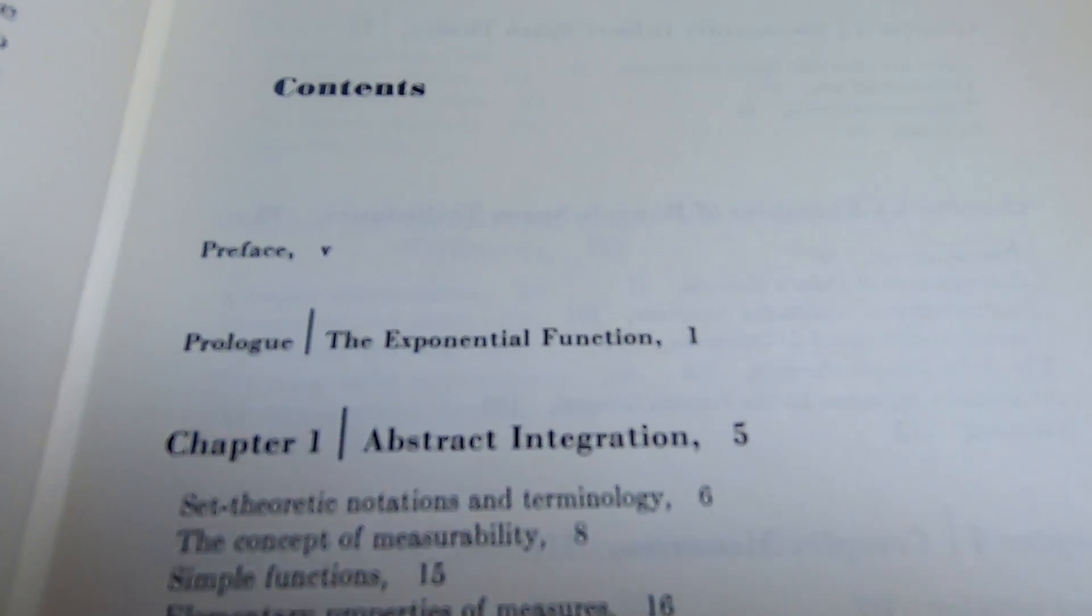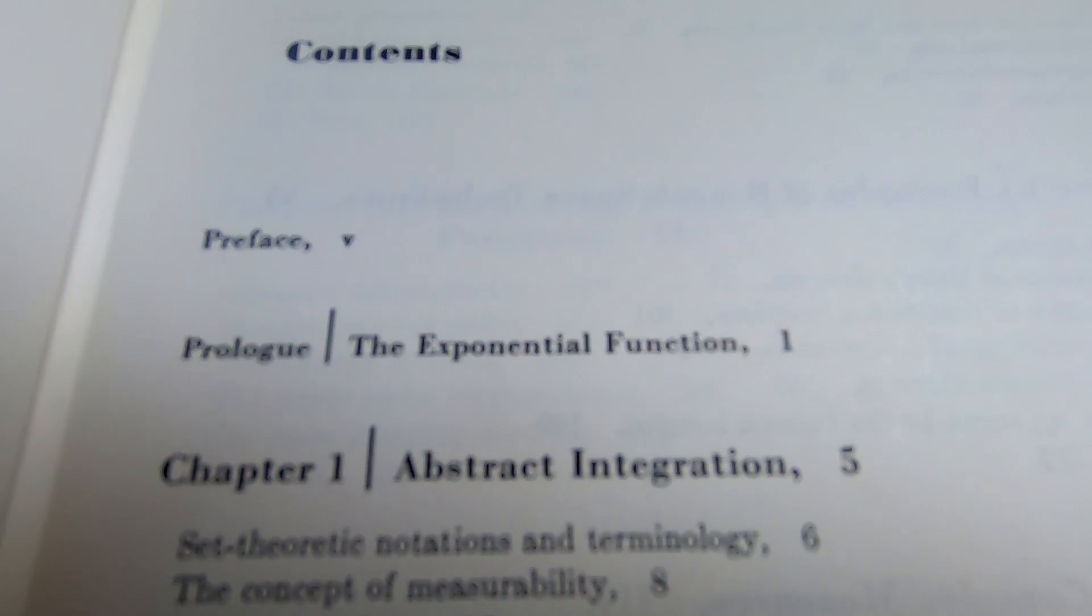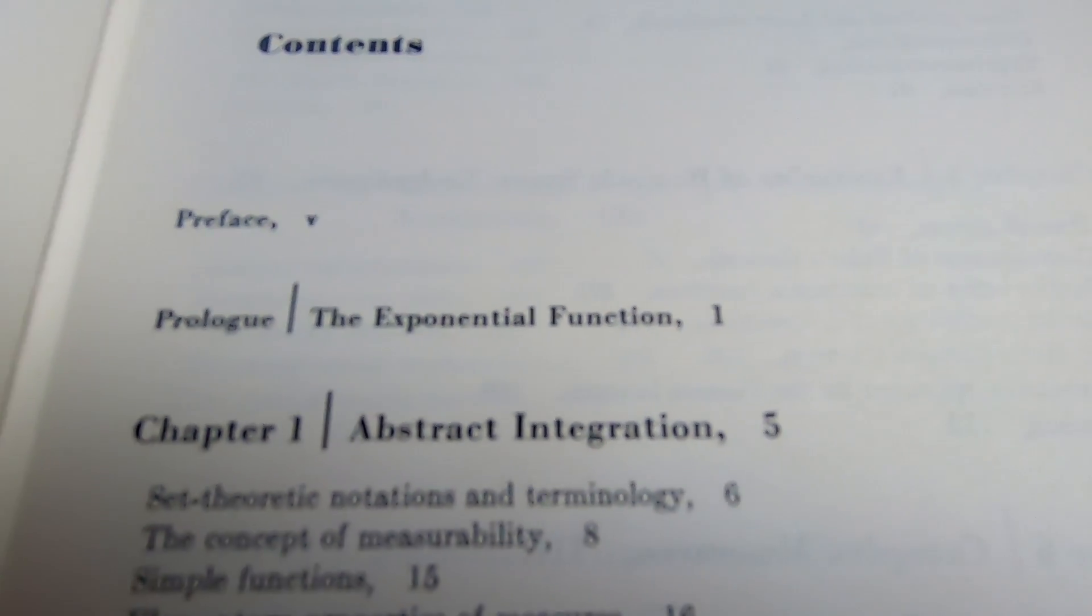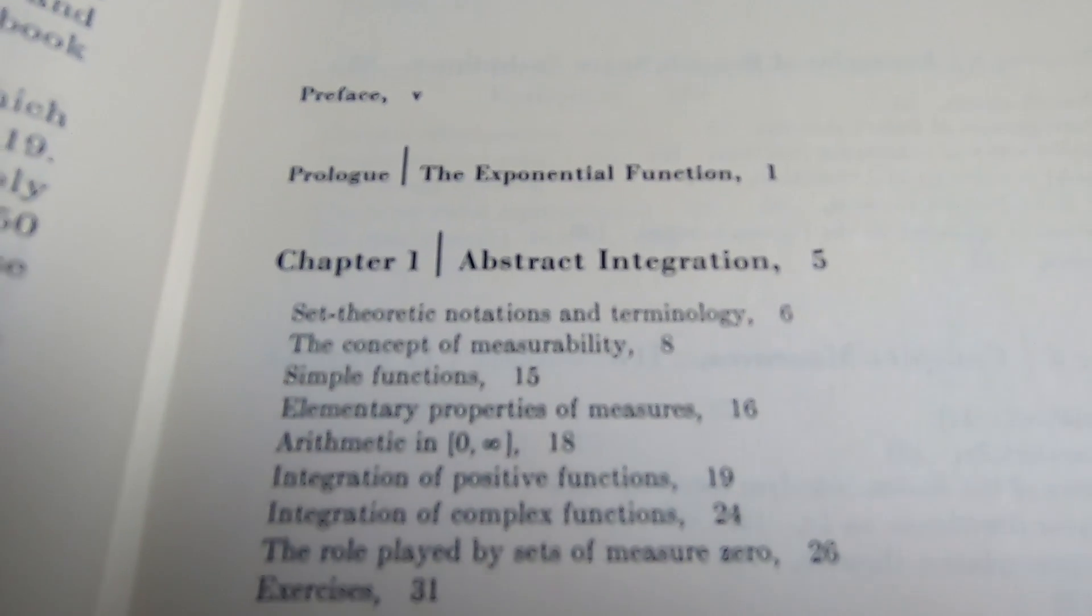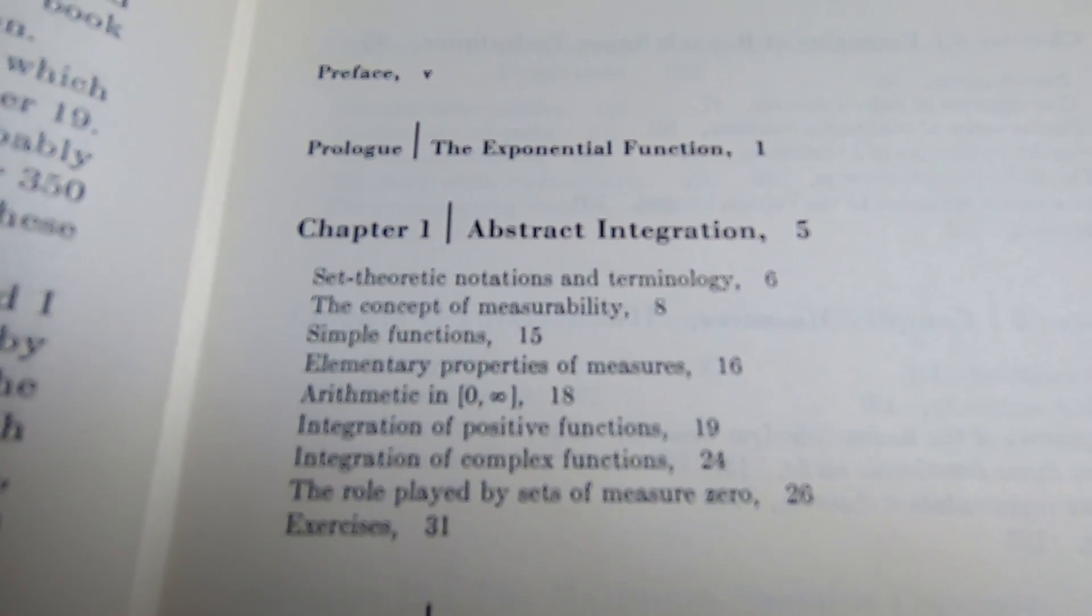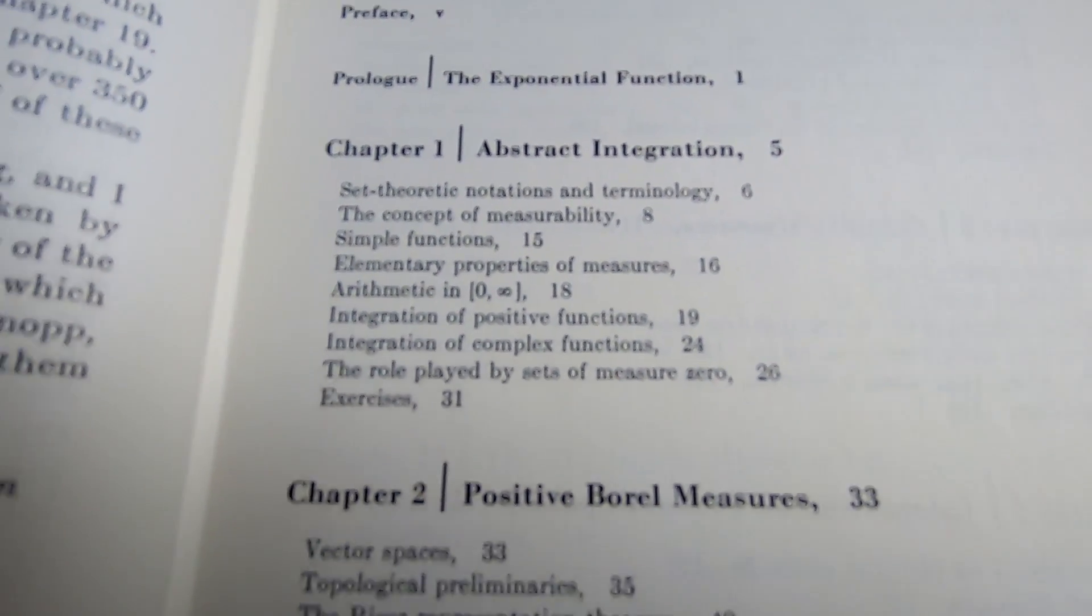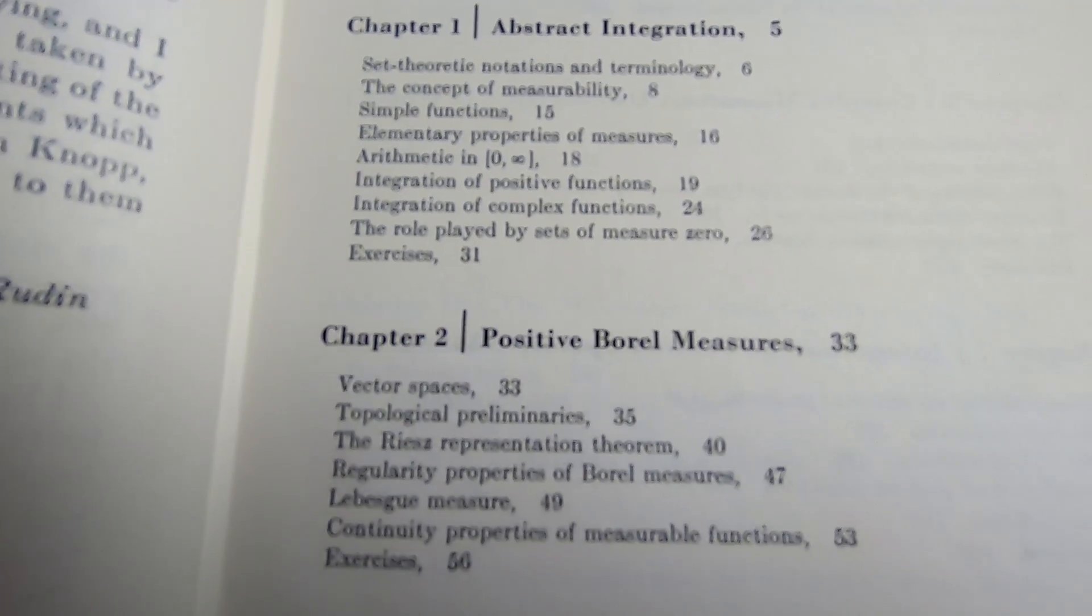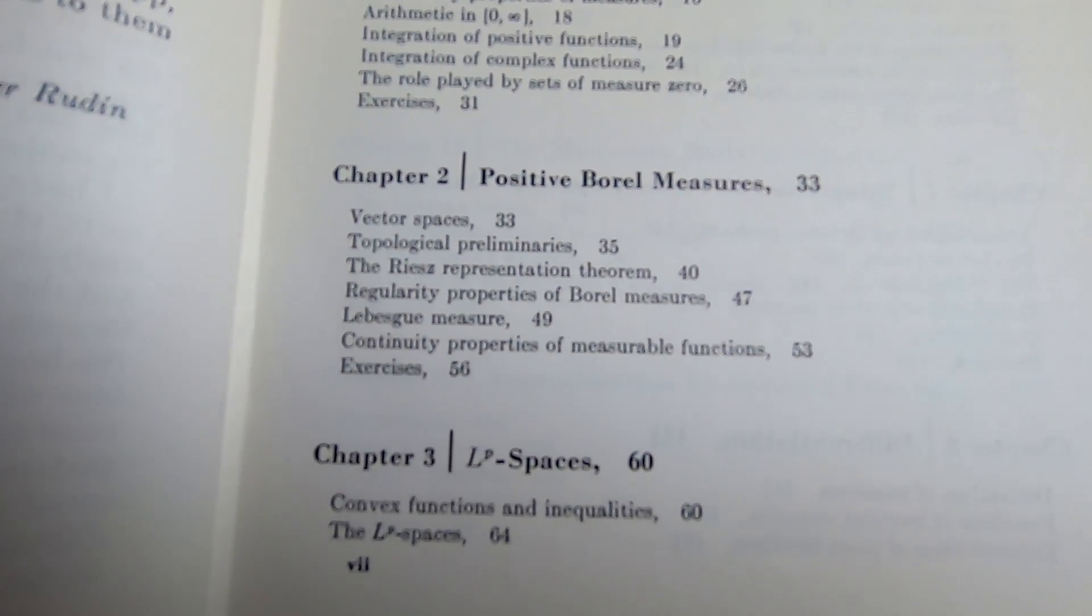So this is the table of contents. It starts off with the exponential function. We'll take a look at that because that's really interesting. Then it goes on to abstract integration, then positive Borel measures, and then LP spaces.